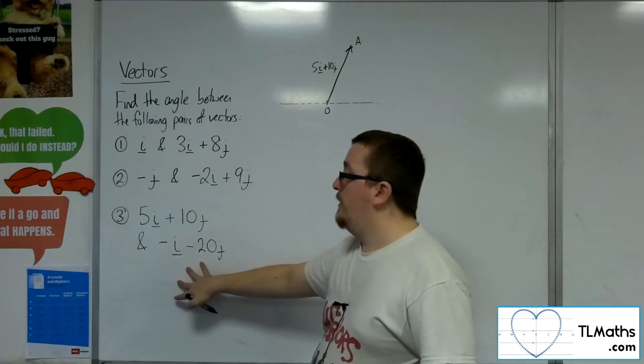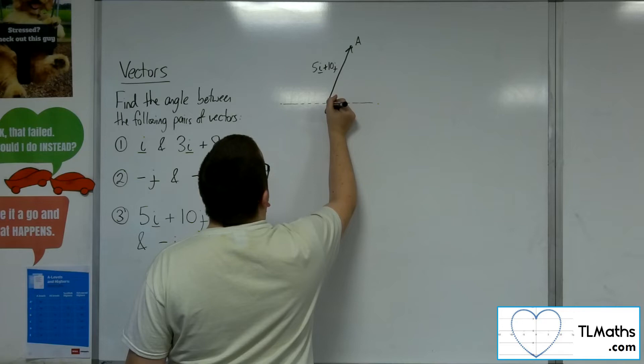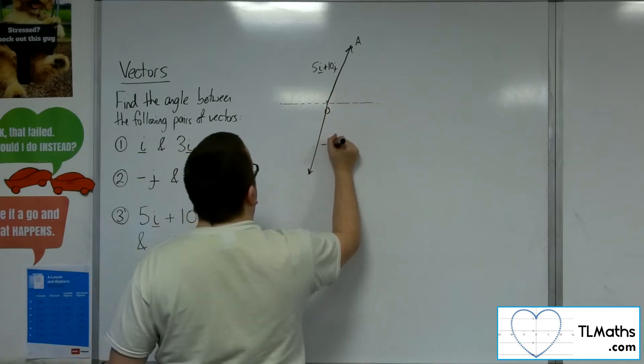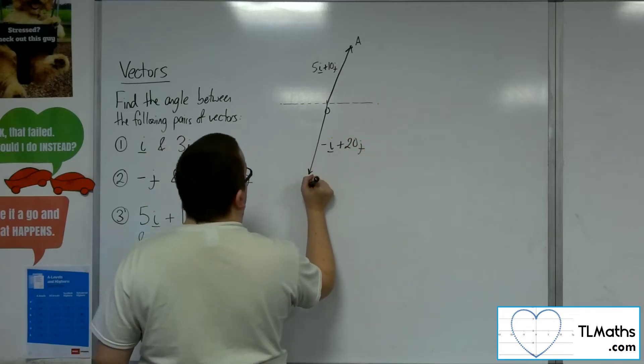So then I've got minus i minus 20j. So minus 1 along, 20 down. So minus i minus 20j. And let's call that point B.